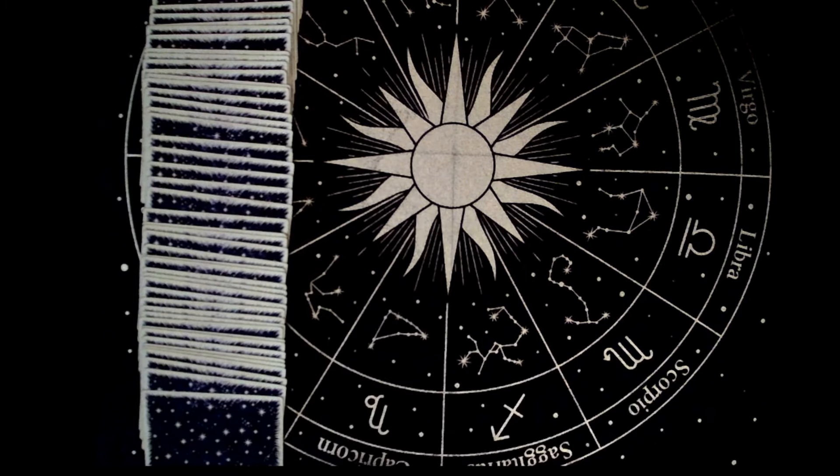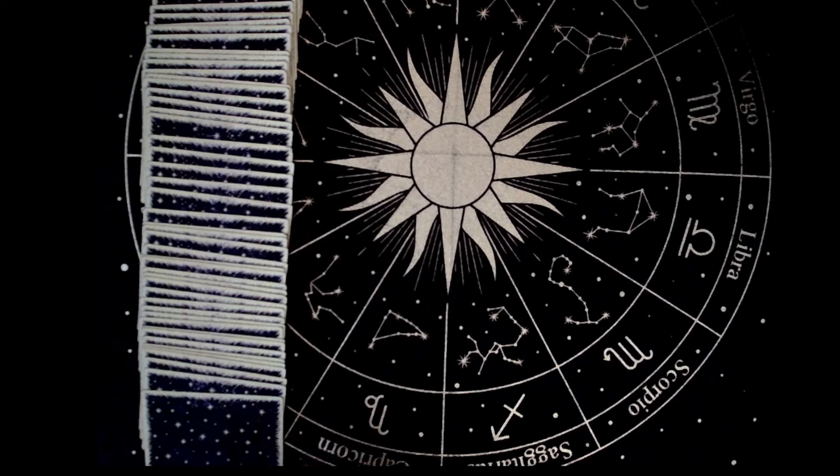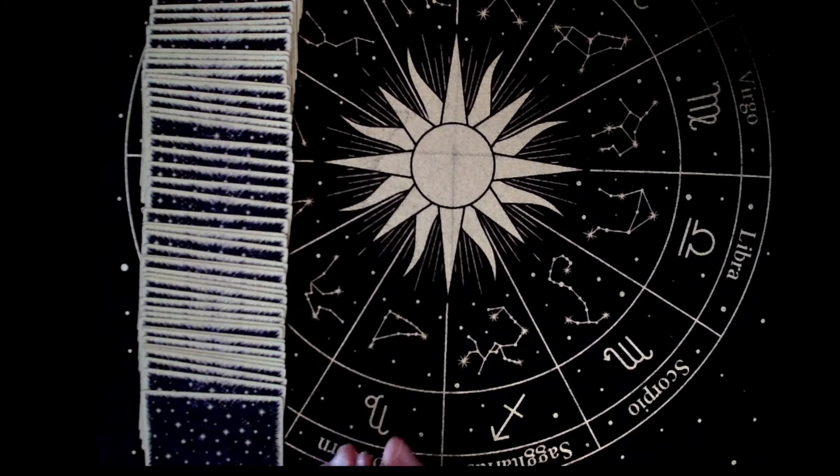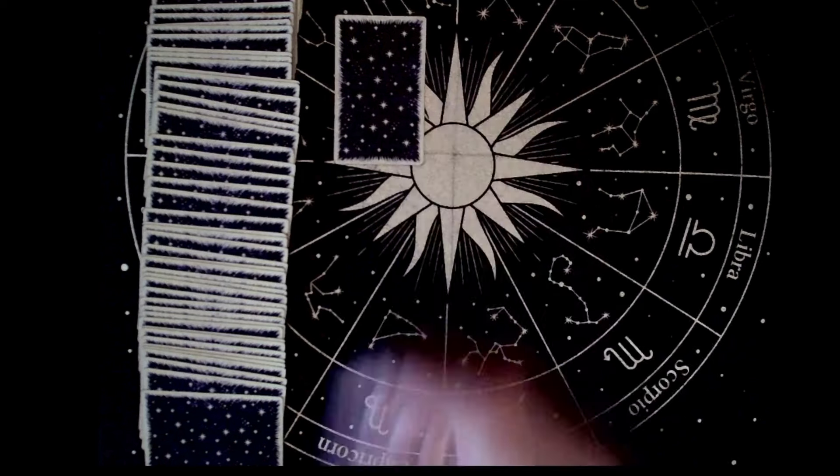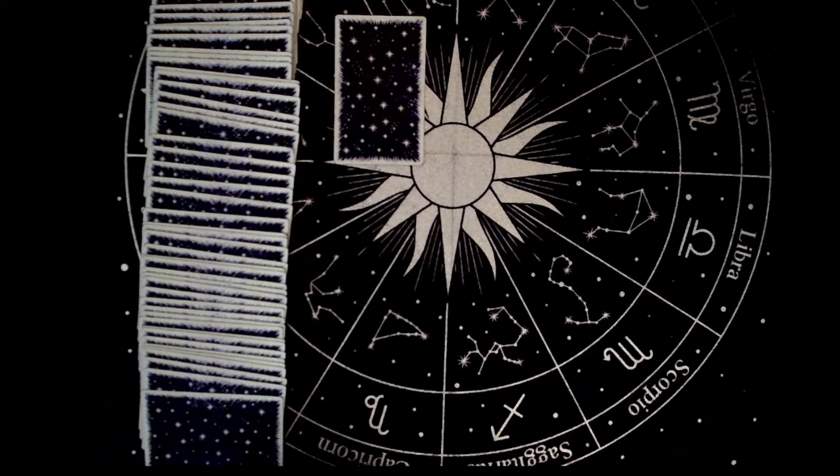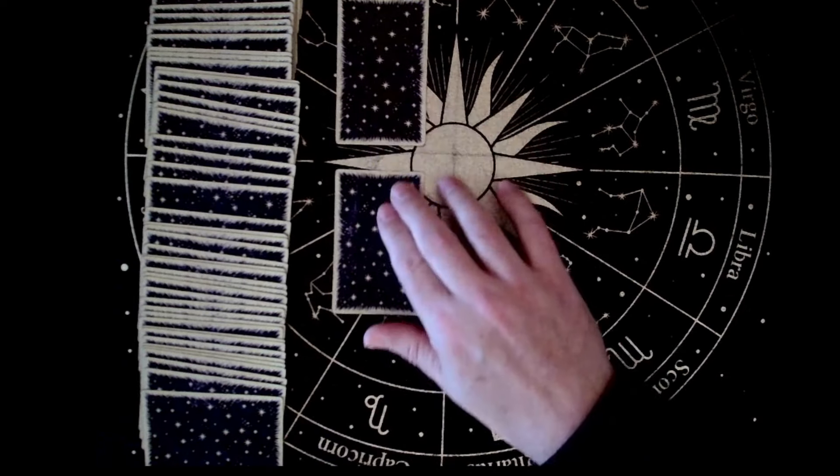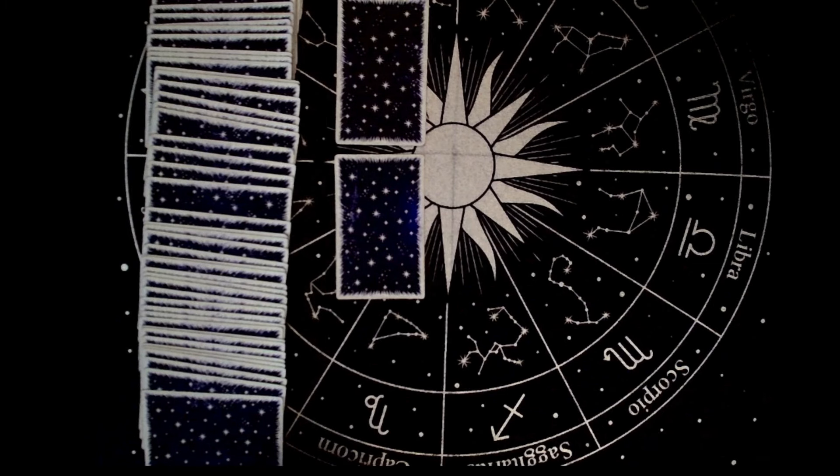Ce que je vais maintenant regarder, c'est comment les électeurs de chaque composante de cette alliance contre nature vont réagir. Est-ce qu'il y aura des reports de voix? Alors, je vais prendre le Front Populaire. Comment vont agir les électeurs écologistes vis-à-vis de leur report de voix sur la Macronie? Comment vont agir les électeurs du PS sur le report de voix vers la Macronie? Et comment vont agir les électeurs de LFI, de la France Insoumise, sur leur report de voix vers la Macronie?